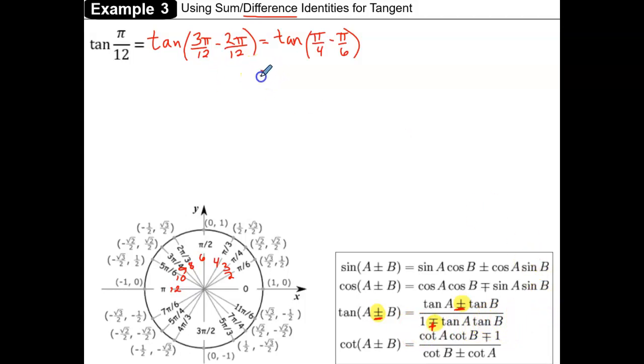We'll go ahead and write that out. Tangent of angle a would be tangent of pi over 4, then that's minus the tangent of angle b, and our angle b is pi over 6. Then that quantity is divided by 1 plus the tangent of angle a, which is pi over 4, times the tangent of angle b, and angle b is pi over 6.